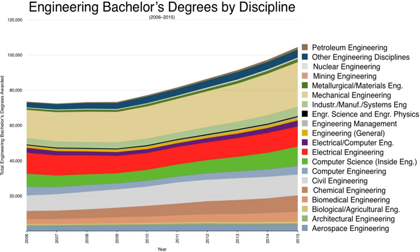In Hong Kong, engineering degree programs are offered by public universities funded by the University Grant Committee. There are 94 UGC-funded programs in engineering and technology offered by City University of Hong Kong, the Chinese University of Hong Kong, the Hong Kong Polytechnic University, the Hong Kong University of Science and Technology, and the University of Hong Kong.